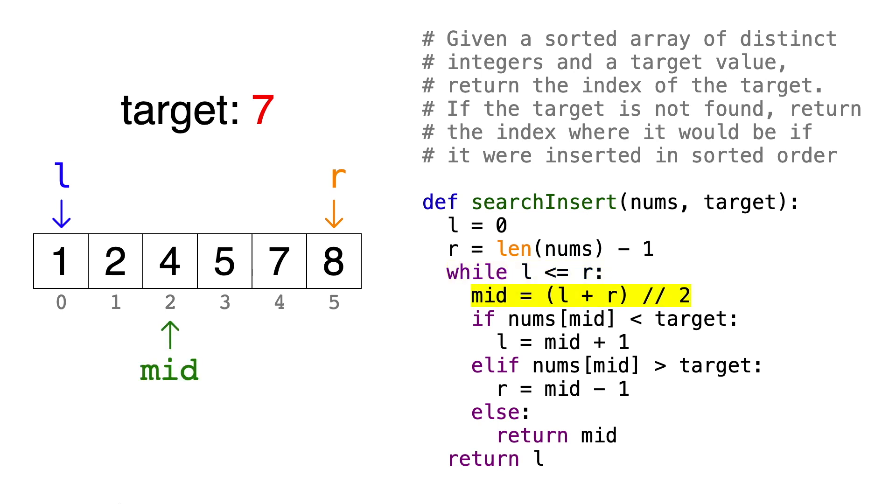So first, we'll calculate the midpoint by taking the average of the endpoints and rounding down to get a whole number. So 0 plus 5 is 5, divided by 2 is 2.5, then rounded down is 2, so mid equals 2. Then we'll compare the element at index 2 to the target and figure out which one of the three scenarios we're in. It's either less than the target, greater than the target, or if neither of those are true, then it must be equal to the target. So the element at index 2 is 4, which is less than 7, so we know that the target has to be to the right of the midpoint. So we'll update l to be mid plus 1, so 3, since we know that the target is not at the midpoint and it must be to the right of it. Then we'll loop again.